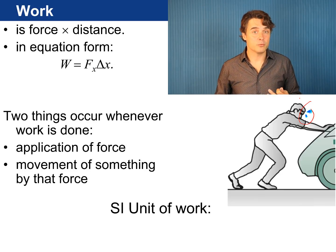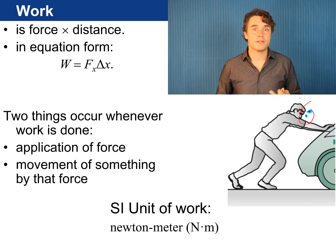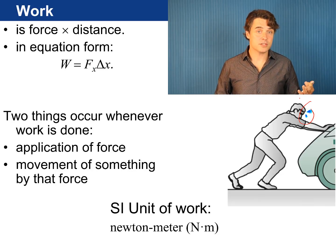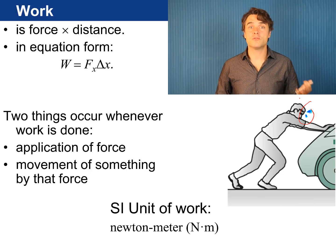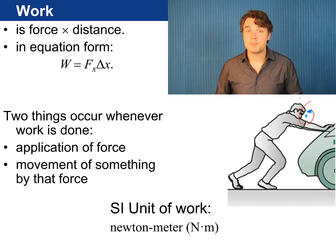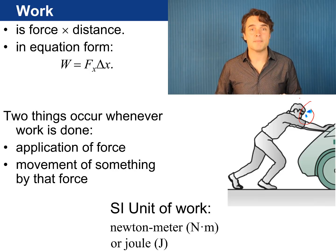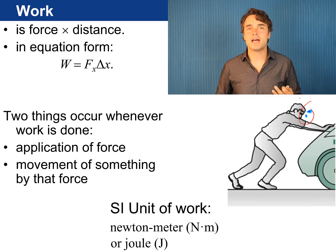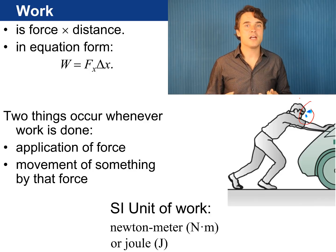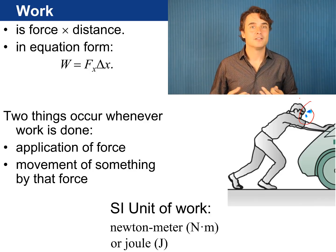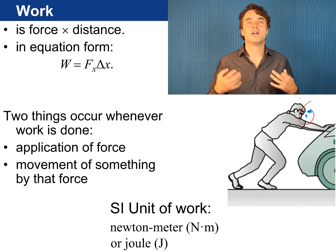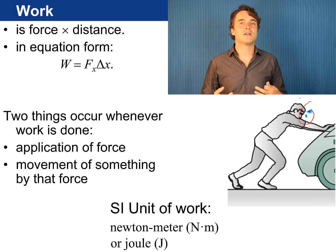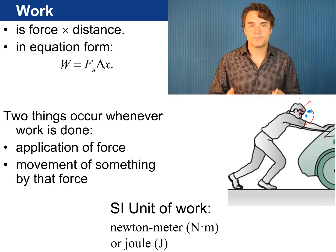The SI unit of work comes from this equation. If force is in newtons and distance is in meters then the SI unit of work is newtons times meters. This unit has been given its own special name in physics. It is named after James Joule and it is called the Joule. So for this guy pushing with a force of 10 newtons over 10 meters you would calculate that he does 100 joules of work.